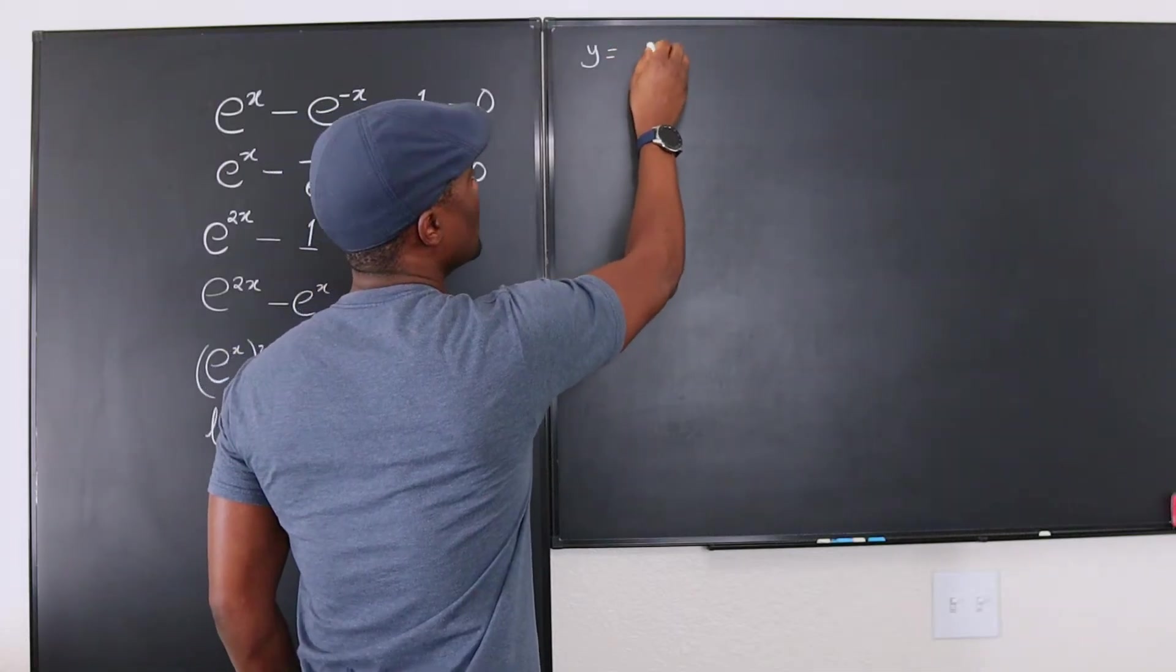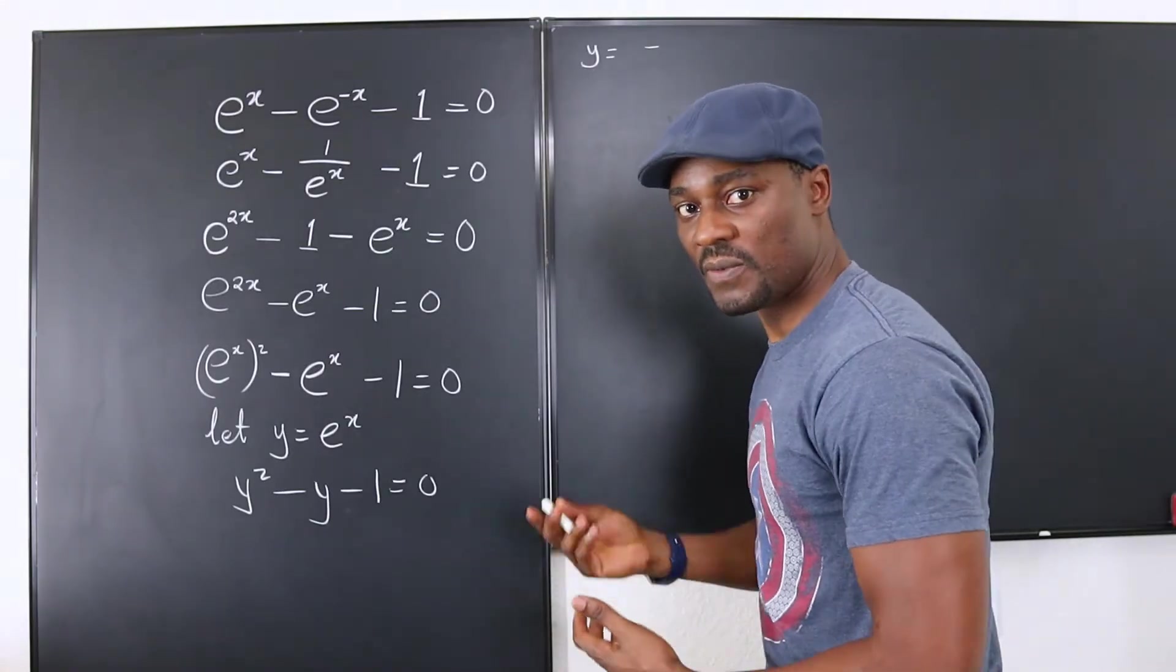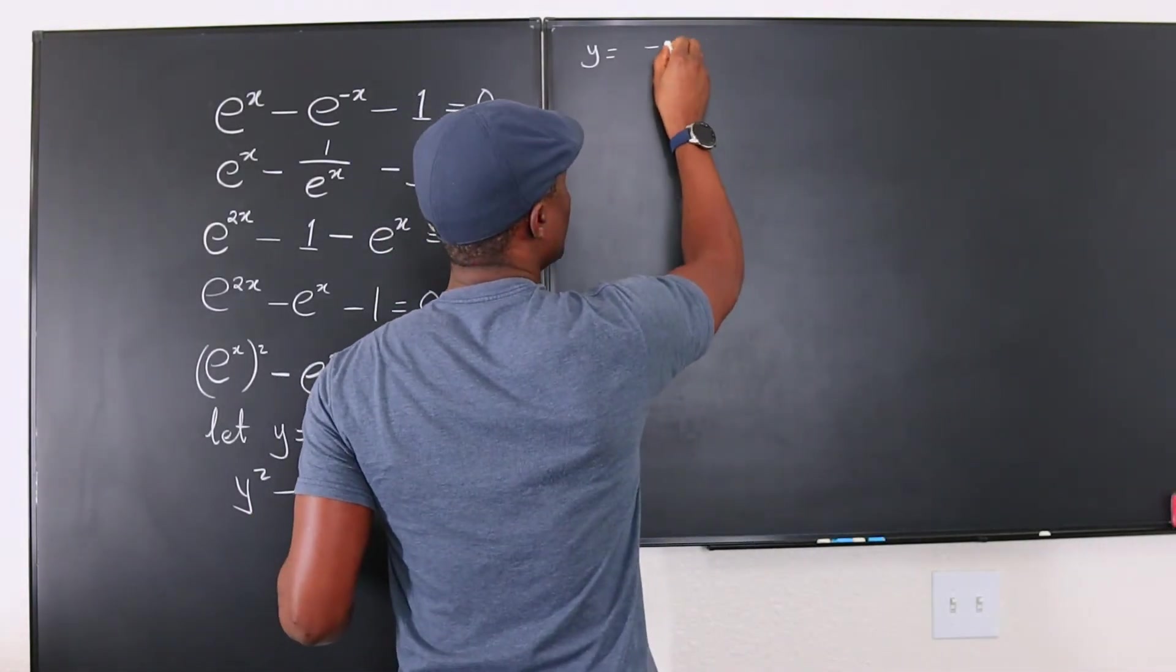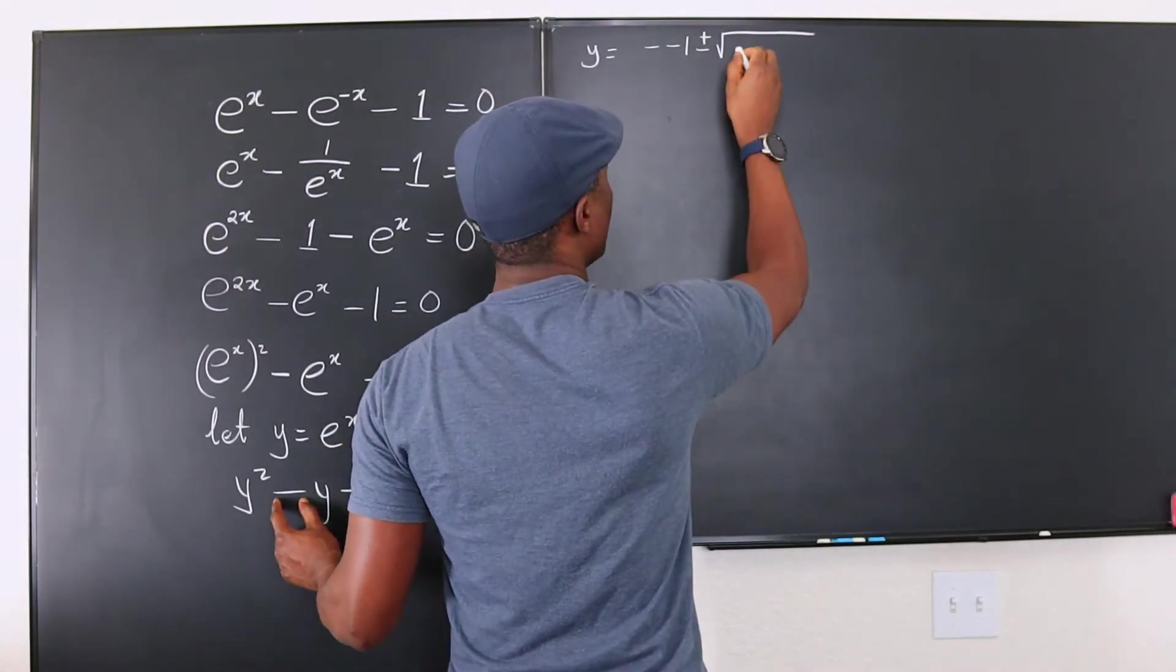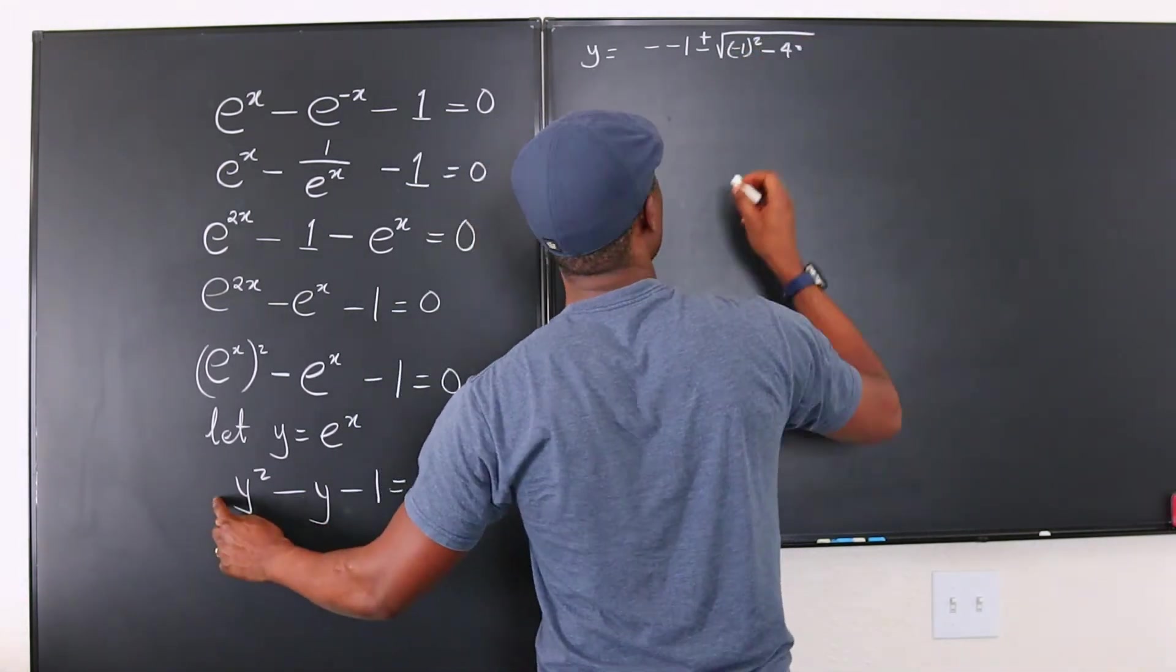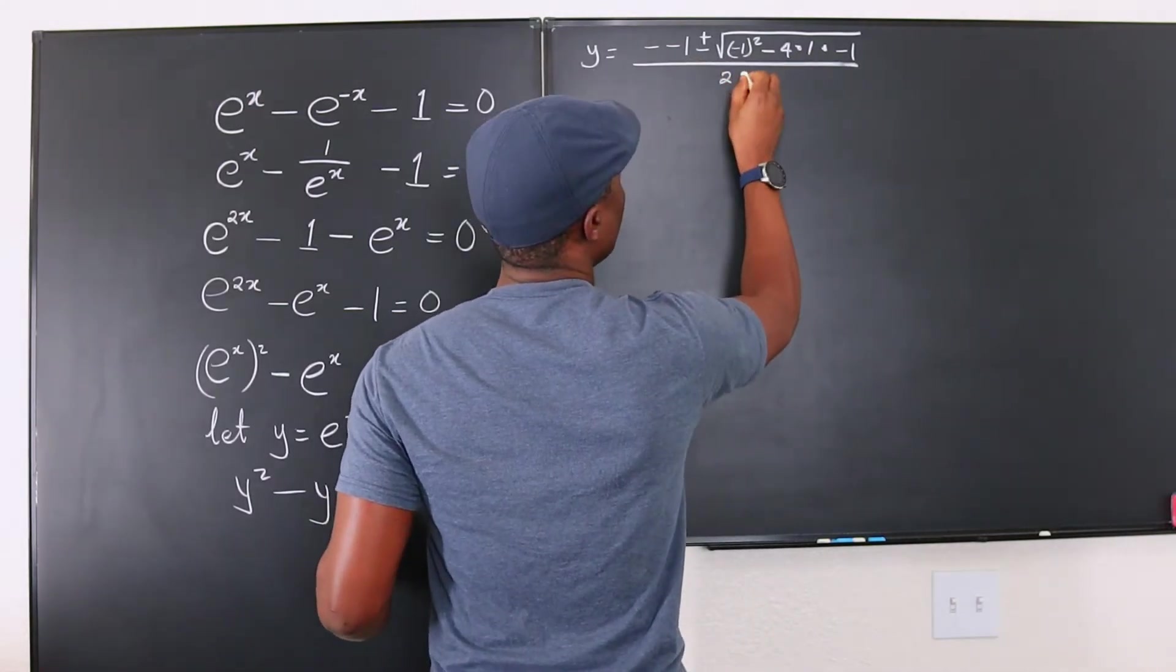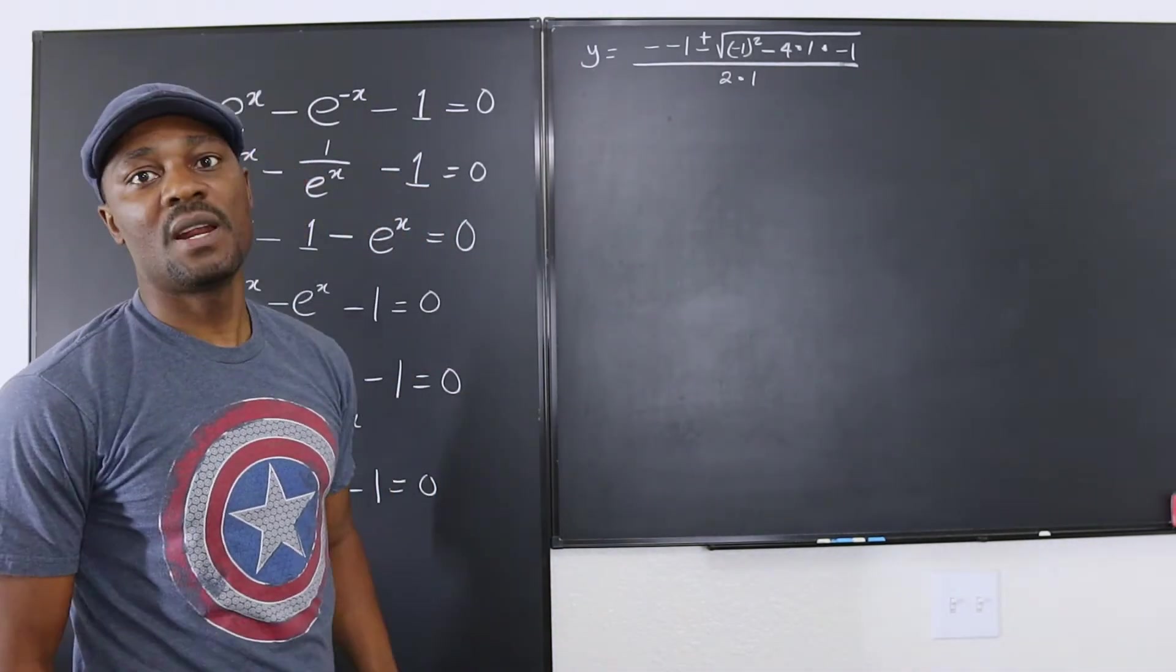So we're going to use the quadratic formula now. So we have y will be equal to minus b. Remember the quadratic formula: minus b plus or minus square root of b squared minus 4ac over 2a. You should know that. So minus b and our b is negative 1. So that's minus negative 1 plus or minus the square root of b squared. b squared will be negative 1 squared. Negative 1 squared minus 4 times a. a is 1. And c will be negative 1. All over 2a. And what's a? That's 2 times 1. So basically that's what you have. We just need to simplify this and we'll get our y.